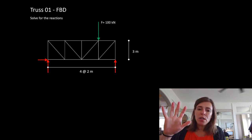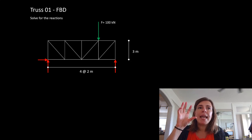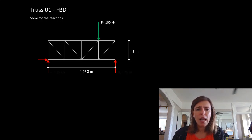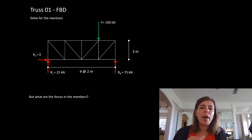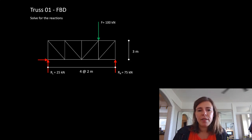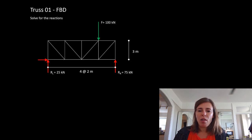You're going to switch to example one, part one videos, where we're going to take a truss and use something called method of sections to solve for some internal forces. If we have this truss, we'd want to solve for the reactions — that we learned how to do last week. No problem. We can solve for our reactions, which you will see in that example video as well.